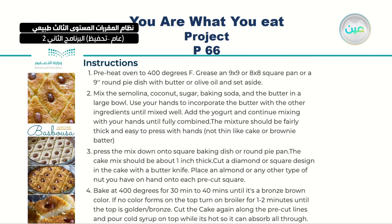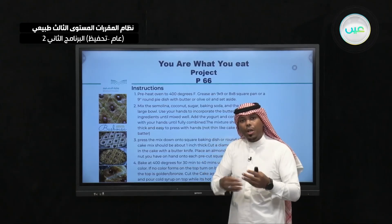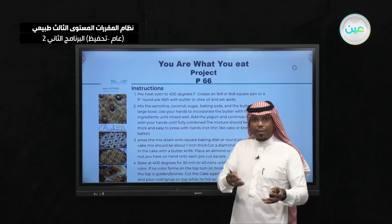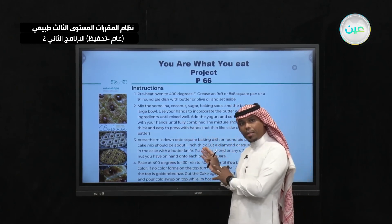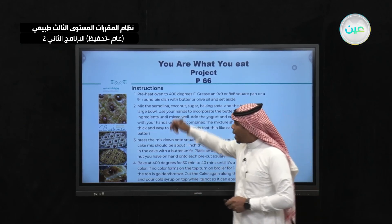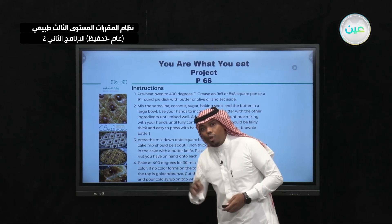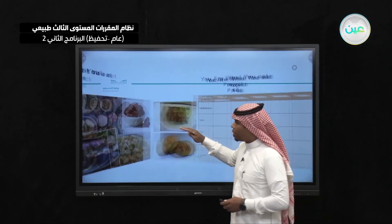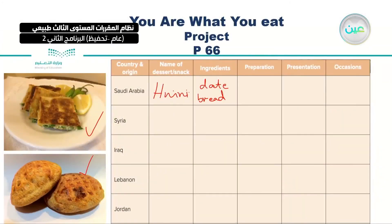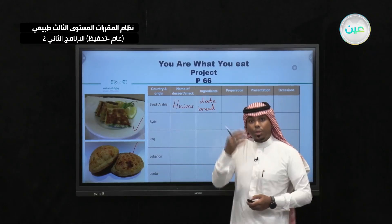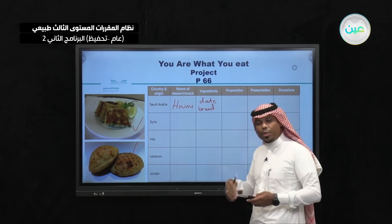Preheat the oven to 400 degrees Fahrenheit. Mix some coconut, sugar, baking soda, and butter in a large bowl. I am giving you the instruction on how you can do this, even at home. But if you want help, call your mother or your sister to help you — inshallah they will help you. And don't forget, guys, you need to add photos and drawings, just like what I did here. Add a lot of photos, drawings, or something like that to your recipes in the slideshow you are going to present.